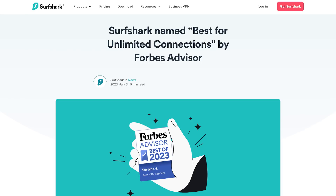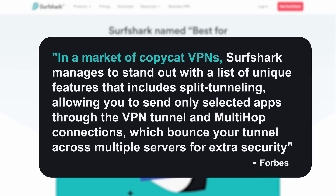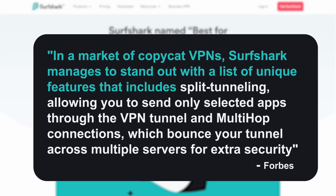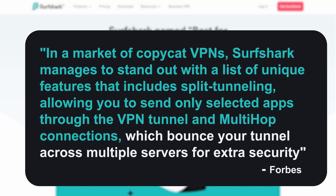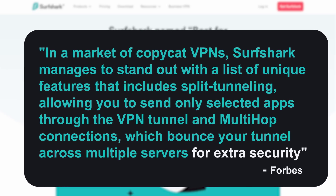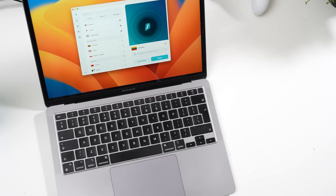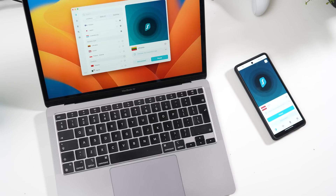Our last bit of news is about Surfshark snagging yet another award — this time from Forbes Advisor for Best VPN for Unlimited Connections. Forbes states: "In a market of copycat VPNs, Surfshark manages to stand out with a list of unique features that includes split tunneling, allowing you to send only selected apps through the VPN tunnel, and multi-hop connections, which bounce your tunnel across multiple servers for extra security." I've personally mentioned Surfshark's unlimited connections feature multiple times, so I'll say it again: connect all of your devices with Surfshark. It's a super unique feature among VPNs — make sure to take full advantage of it.